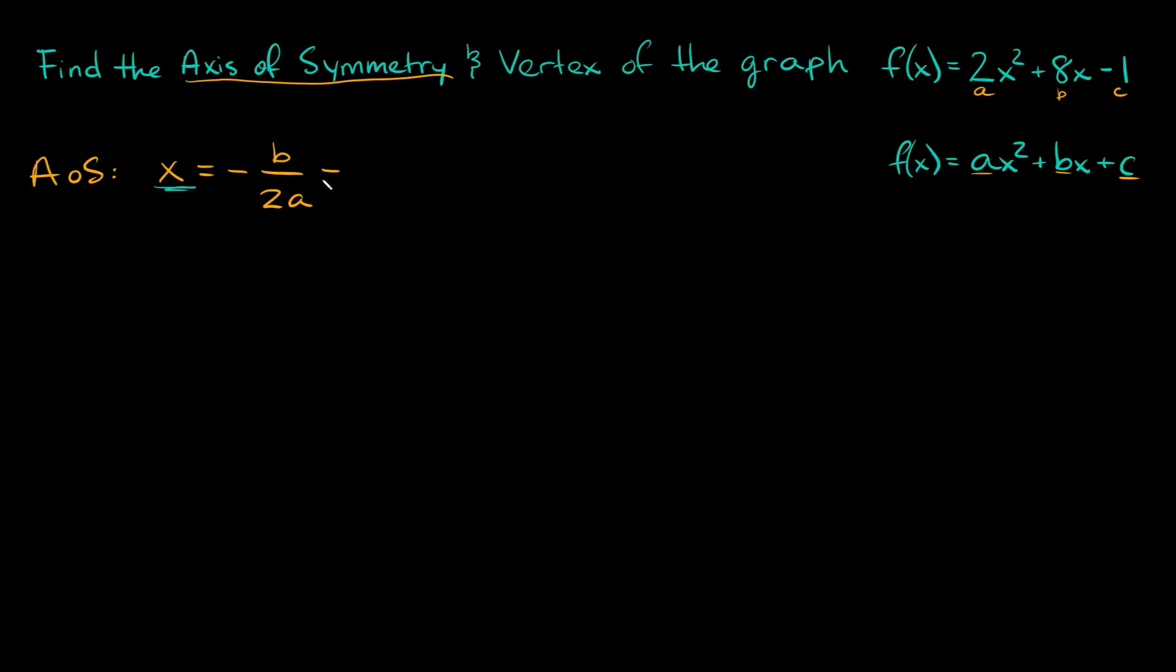This is going to equal negative b on top. Remember, b in this example is 8, positive 8, and that's over 2a and a is positive 2. This equals negative 8 over 4, and 8 over 4 equals 2, so this equals negative 2. The axis of symmetry is at x equals negative 2. I'll write it right here: x equals negative 2. We found our axis of symmetry.